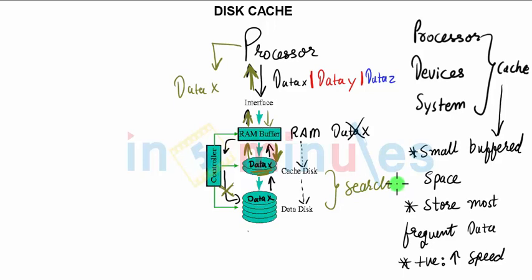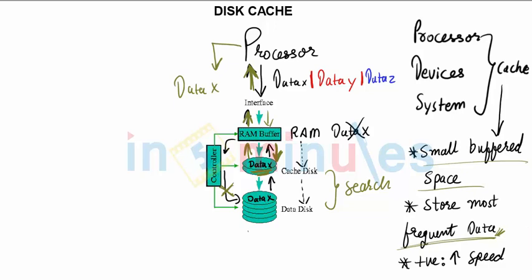So this is disk cache. In formal terms: it's a small amount of buffered space which stores the most frequently used — or likely to be used — data. This saves time when searching for frequently accessed data, improving the speed of communication. That's it — this is what cache is about. Thanks for watching.